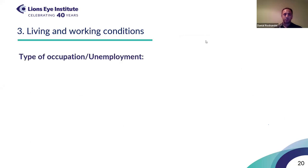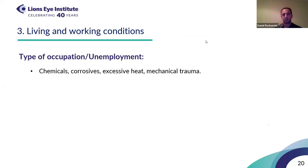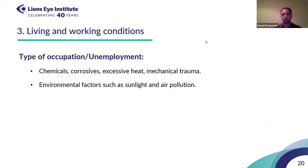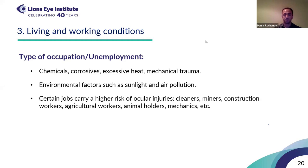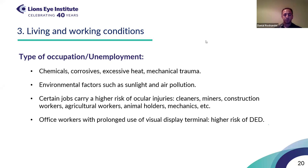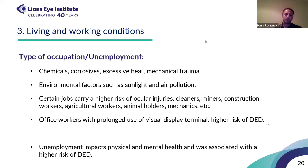Living and working conditions can affect the ocular surface as well. Certain occupations are associated with higher risk — those dealing with chemicals, corrosive agents, excessive heat, mechanical trauma, excessive sunlight, or air pollution. High-risk jobs include cleaners, miners, construction workers, agricultural workers, animal handlers, and mechanics. Interestingly, office workers are also at high risk for dry eye disease due to prolonged use of visual display terminals. Unemployment can impact physical and mental health and consequently cause a higher risk of dry eye disease and other ocular surface problems.